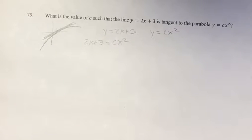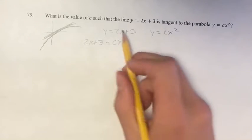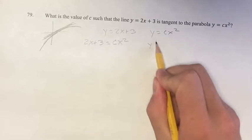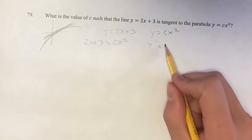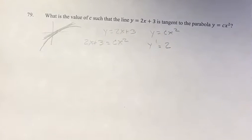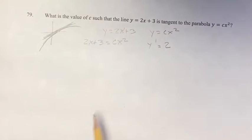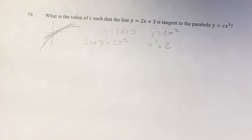If we look at the derivatives, since we know that they're going to have the same slope, they're going to have the same value of the derivative. The derivative of this first one, y prime, is going to be the coefficient, since it's x to the first power, plus the derivative of the constant 3 is just 0, so 2.